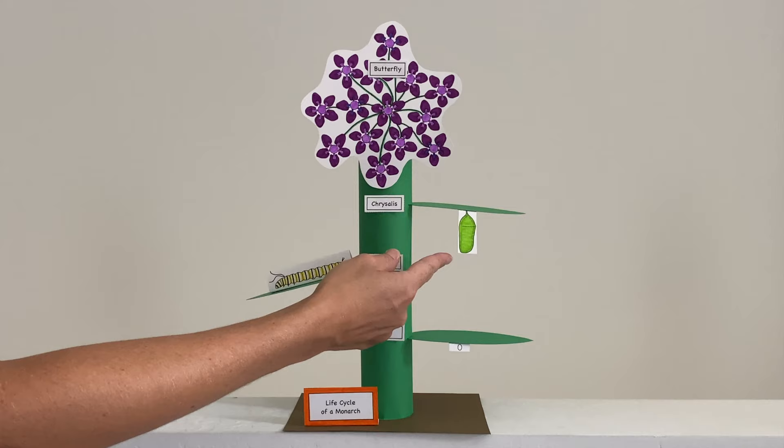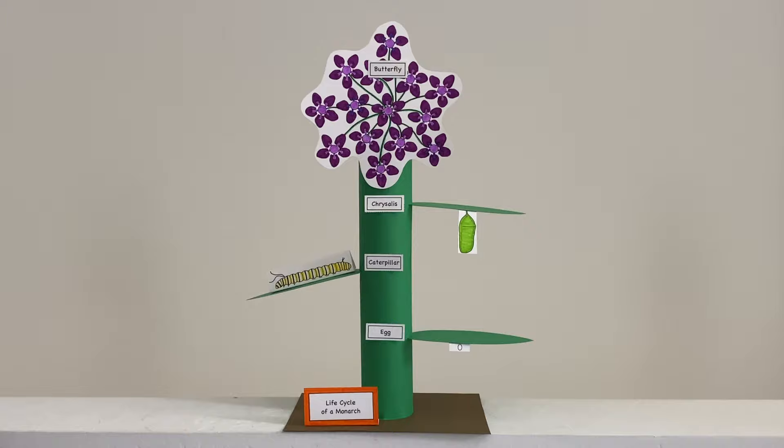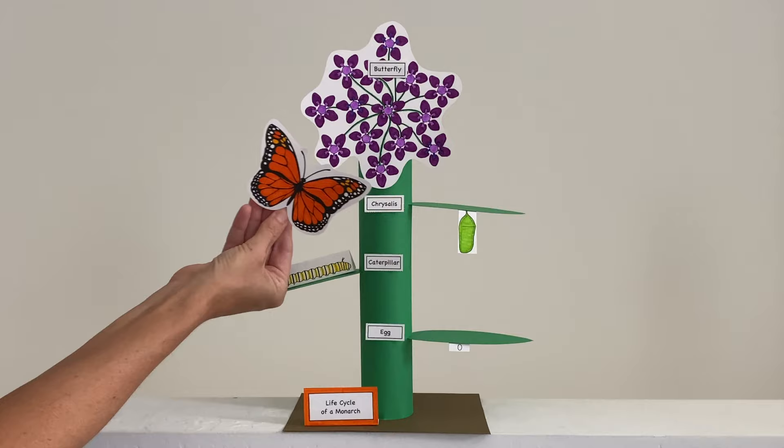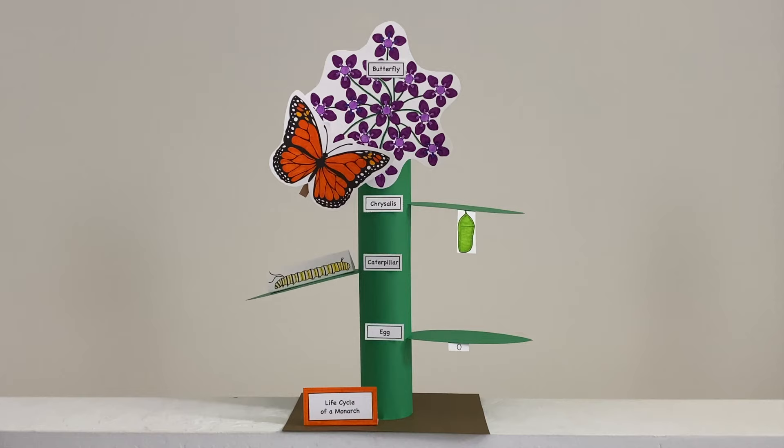Inside the chrysalis, the caterpillar changes. It metamorphosizes and when it's ready it emerges from its chrysalis as a monarch butterfly. Then it will get nectar from the flower and start the cycle all over again.